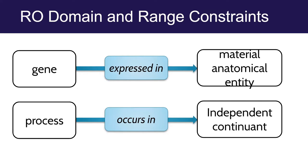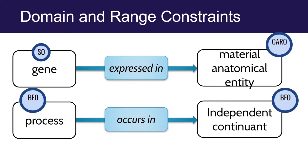In RO we have a formal model of all these relations. We use OWL, and one of the nice things about OWL is you can explicitly encode domain and range constraints for your object properties. For the 'expressed in' relation, you can say the domain is a gene and the range is a material anatomical entity. Then you can use an OWL reasoner — if I incorrectly say a particular cell is 'expressed in' the lung, the reasoner, with sufficient disjointness axioms, will tell me I've made a mistake. So the question is: where do these classes come from for expressing domain and range constraints?